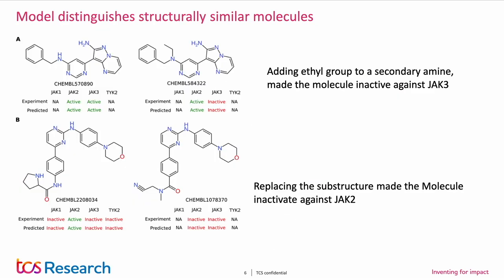An interesting finding in this study was that the XGBoost model was able to distinguish structurally similar molecules with different labels. Substituting hydrogen with an ethyl group made the molecule inactive against JAK3, and in another case, substituting a particular substructure with a different one made the molecule inactive against JAK2.